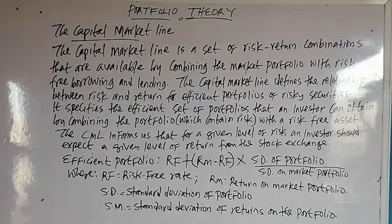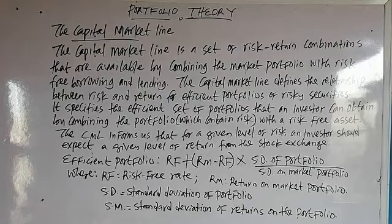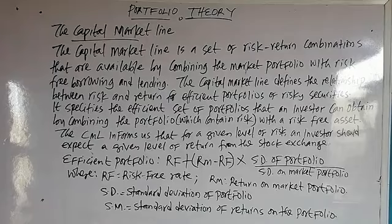Likewise, if companies are going there to raise funds, on the other side of it, somebody should be able to provide these resources which the company is going to make use of. Now, the capital market line is a set of risk-return combinations that are available by combining the market portfolio with risk-free borrowing and lending.